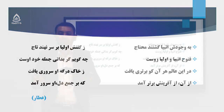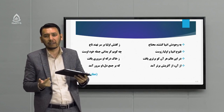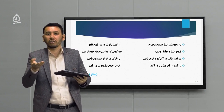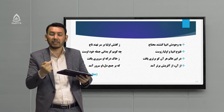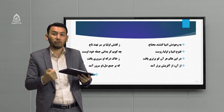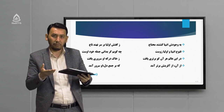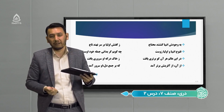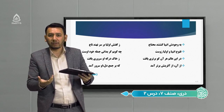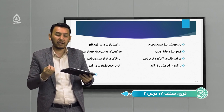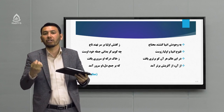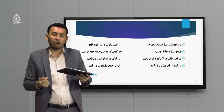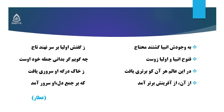تمام پیروزی‌هایی که انبیا و اولیا الهی به دست می‌آورند به واسطه وجود پاک پیامبر است. «در این عالم هر آن کو برتری یافت، زخاک درگه او سروری یافت»: در این دنیا اگر کسی می‌خواهد برتری پیدا کند، به مقام‌های عالی برسد، باید از پیامبر کمک بگیرد. «از آن از آفرینش برتر آمد که بر جمع دل او سرور آمد»: تمام موجودات و این هستی به واسطه پیامبر خلق شده؛ اگر پیامبر نبود این جهان وجود نداشت، چون پیامبر سرور و پادشاه همه موجودات دنیا می‌باشد.